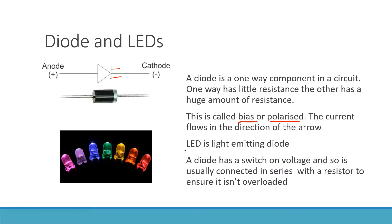An LED is a light-emitting diode — just like a regular diode, except it emits light as current flows through it. LEDs are used extensively in modern electronics due to their efficiency. Importantly, a diode has a switch-on voltage, and it's usually connected in series with a resistor to ensure it isn't overloaded. The two key points about diodes: they are non-ohmic resistors, and they are biased — they let current flow one way but not the other.